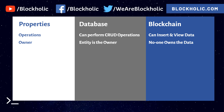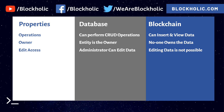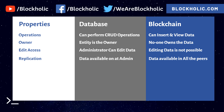The third point is edit access. In a traditional database, an administrator can make changes — for example, if my bank balance is $10,000 and someone has database access, they could just edit it to $50,000. But in blockchain, you cannot edit any data at all; it is simply not possible.